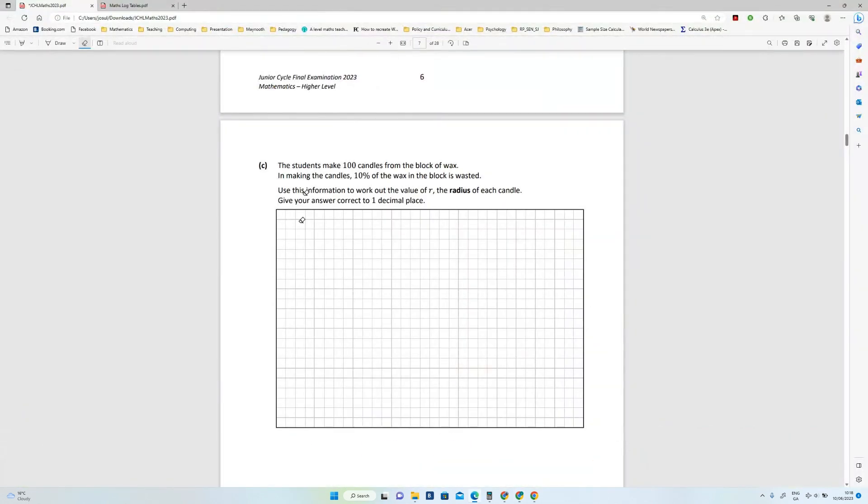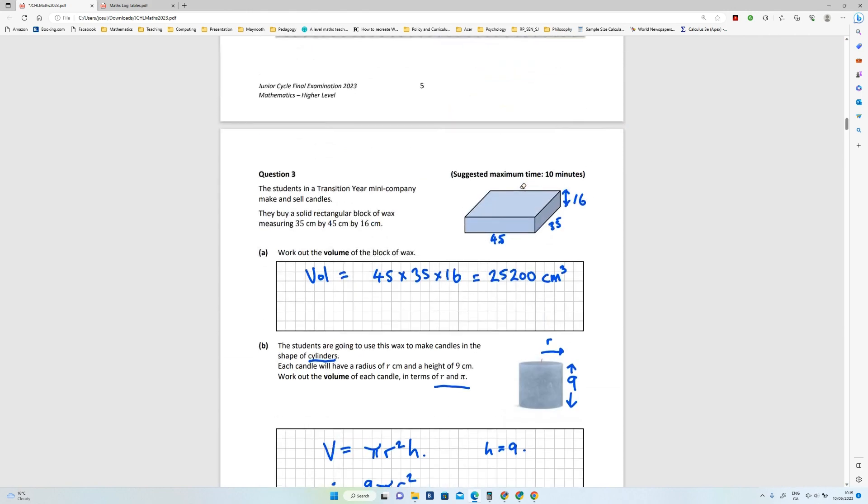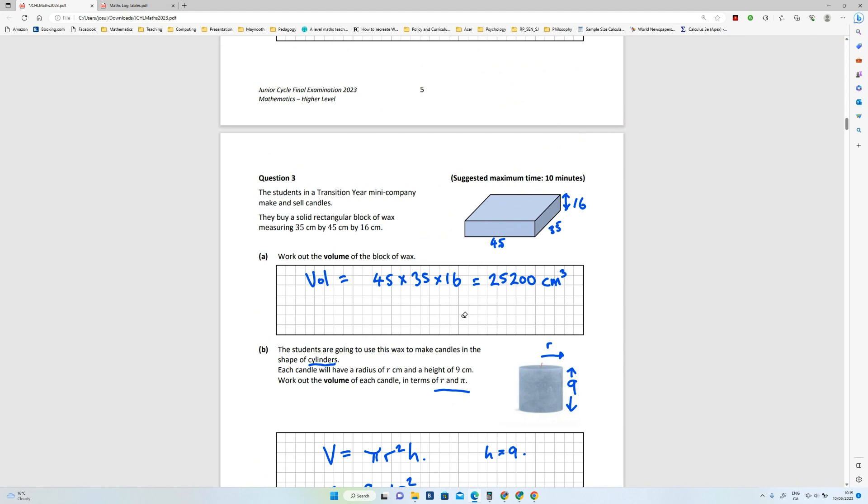Alright, so the third part, part C. The students make 100 candles from the block of wax. In making the candles, 10% of the wax in the block is wasted. So if I go back up and get that number, 25200.